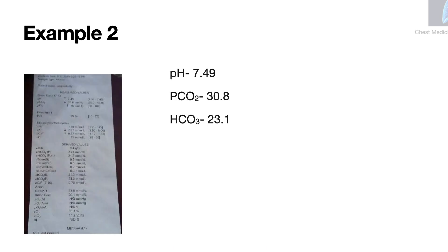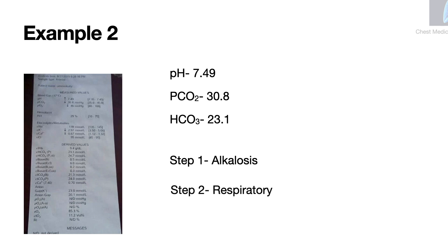Let us look at another example. The pH here is 7.49, the pCO2 is 30.8, and the bicarbonate is 23.1. Step 1: This is an alkalosis. Step 2: The carbon dioxide is low, whereas the bicarbonate is normal. So the carbon dioxide falls on the alkaline side of the spectrum, and this is a respiratory alkalosis.